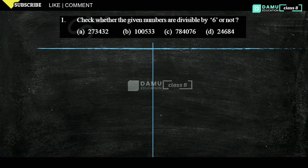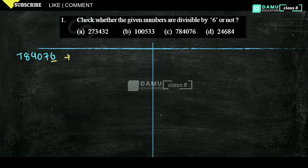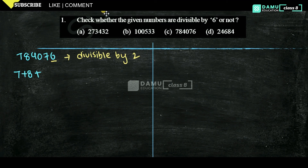In order to be divisible by any composite number, the number must be divisible by both factors. Our next example is 784076. The unit digit is 6, so it is divisible by 2. Now we check divisibility by 3 — add all the digits: 7 + 8 + 4 + 0 + 7 + 6.